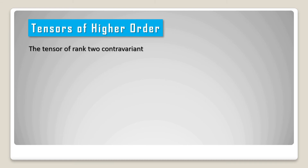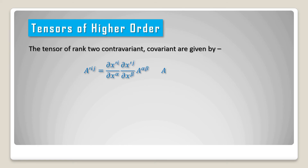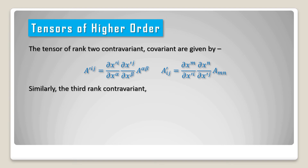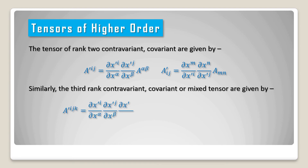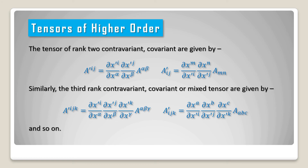Tensors of higher order. The rank 2 contravariant tensor is given by a prime upper suffix ij equal to del x prime i divided by del x alpha, into del x prime j divided by del x beta, into a alpha beta. The covariant rank 2 tensor is given by a prime lower suffix ij equal to del x alpha divided by del x prime i, into del x beta divided by del x prime j, into a alpha beta. Similarly the third rank contravariant tensor is given by a prime upper suffix ijk equal to del x prime i divided by del x alpha, into del x prime j divided by del x beta, into del x prime k divided by del x gamma, into a alpha beta gamma.